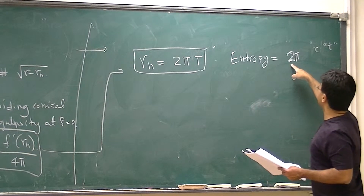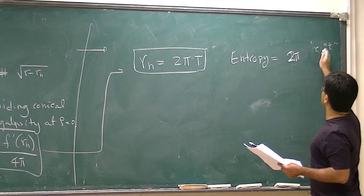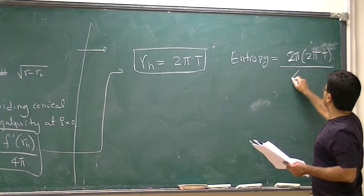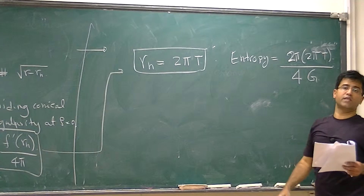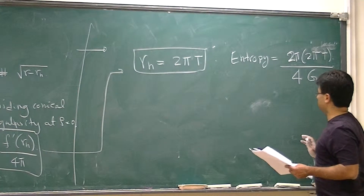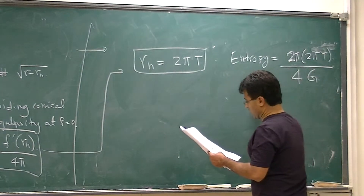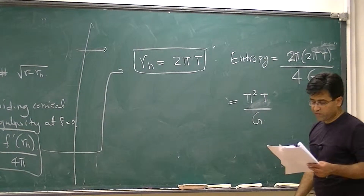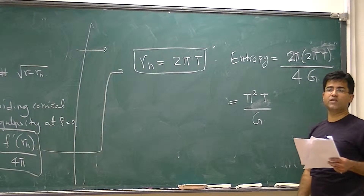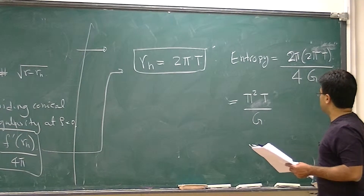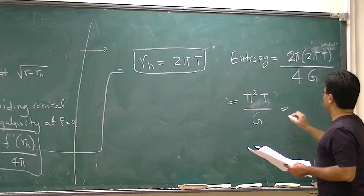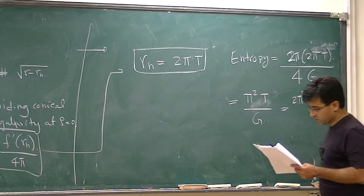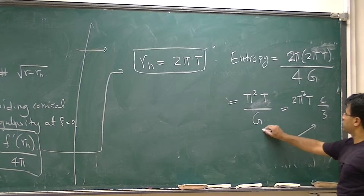When we talk about the area of the horizon, it's 2 pi times 2 pi T, and then we divide by 4 times Newton's constant in three dimensions — entropy is area divided by 4G, that's Bekenstein's formula. This gives us pi squared times T divided by Newton's constant. And if we use Brown and Henneaux's relation that the central charge of the CFT is related to Newton's constant, then this is just 2 pi squared T times the central charge divided by 3.